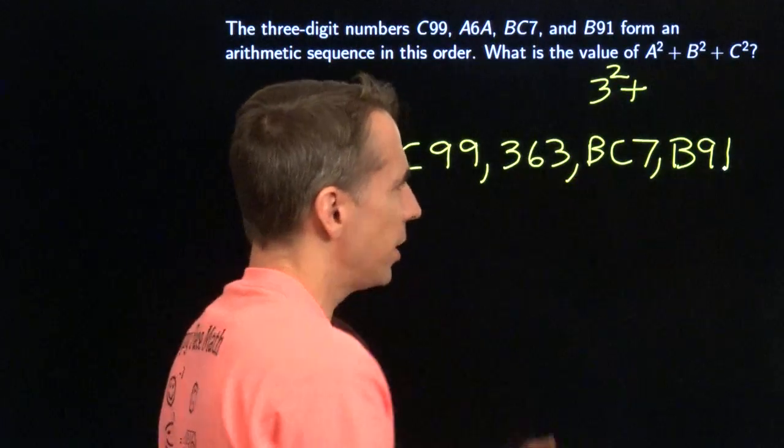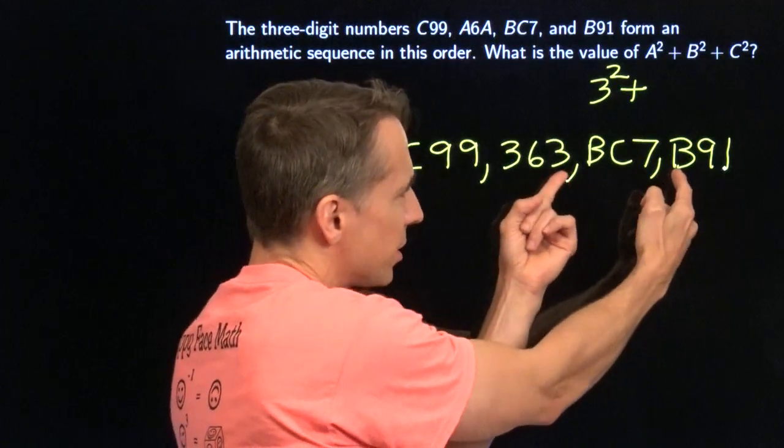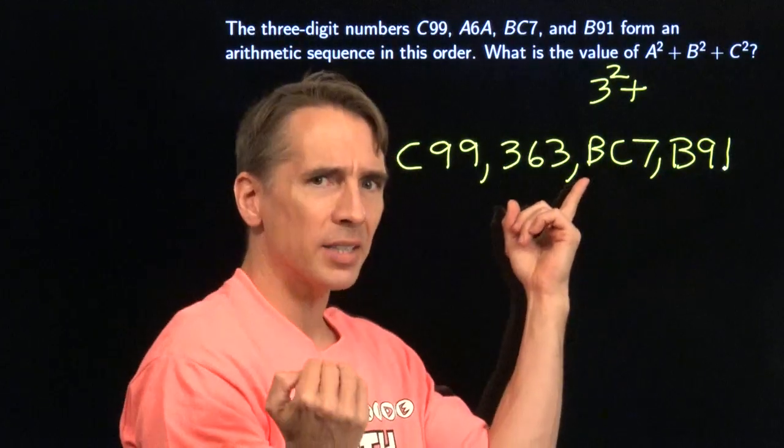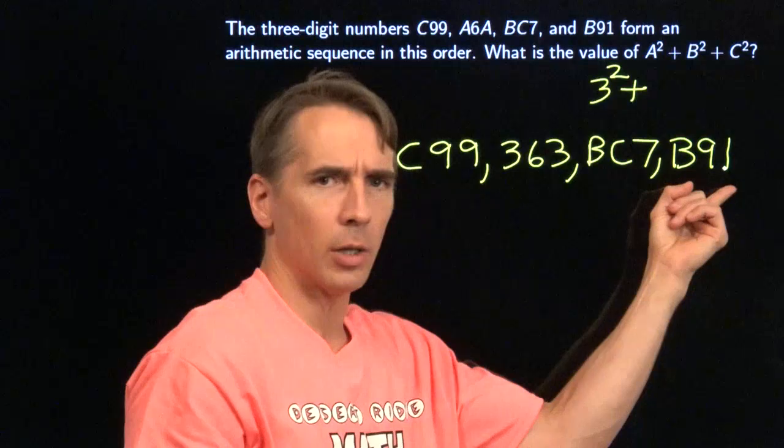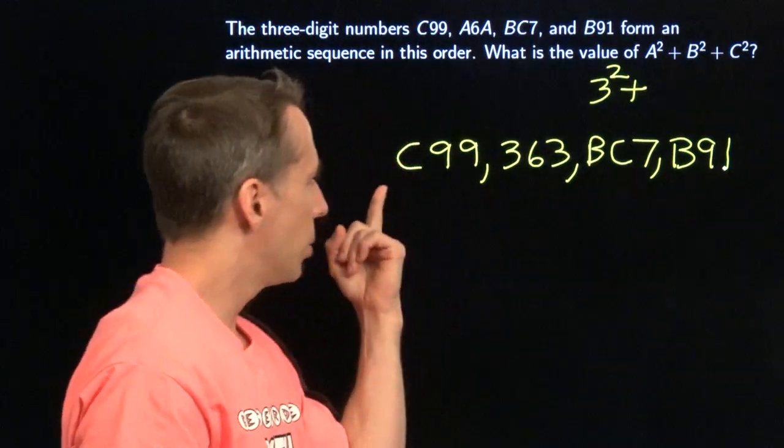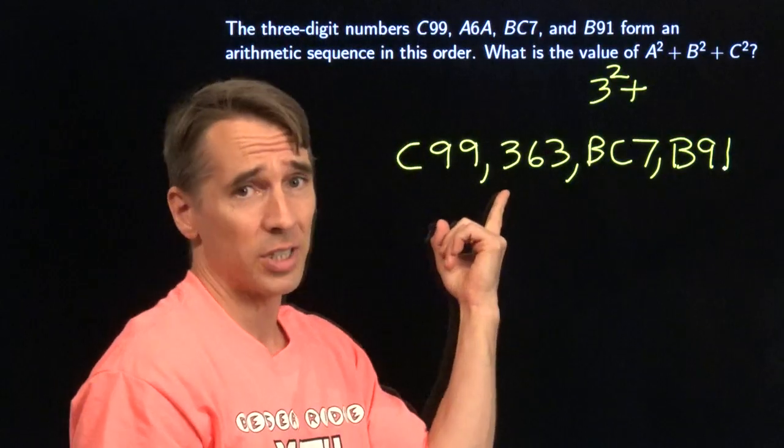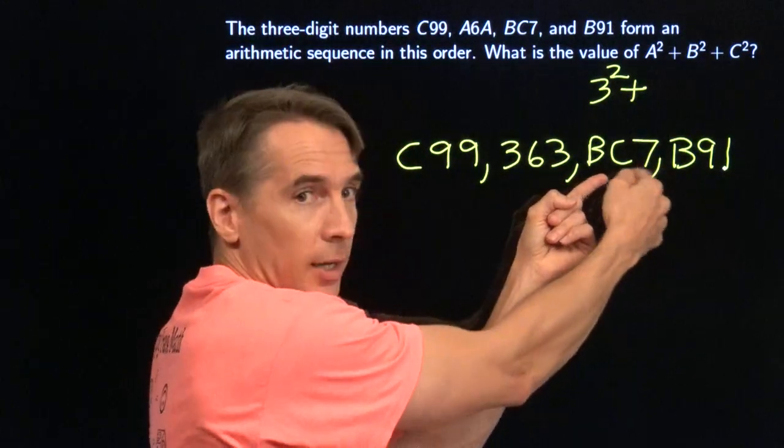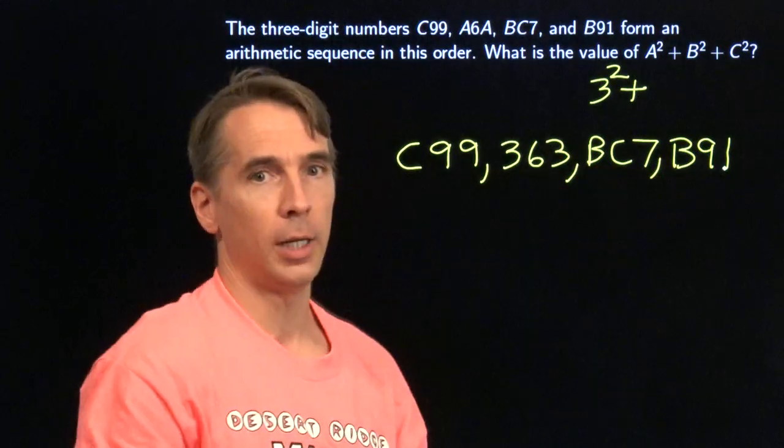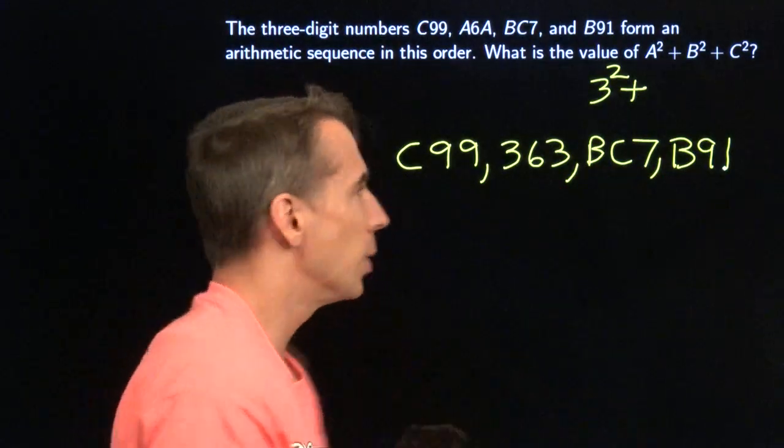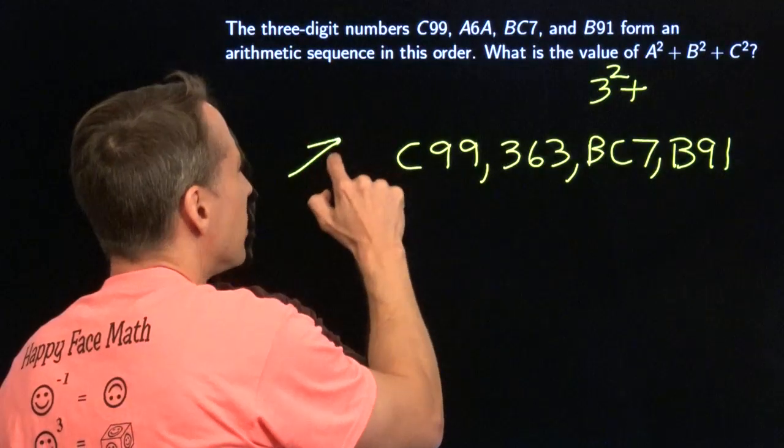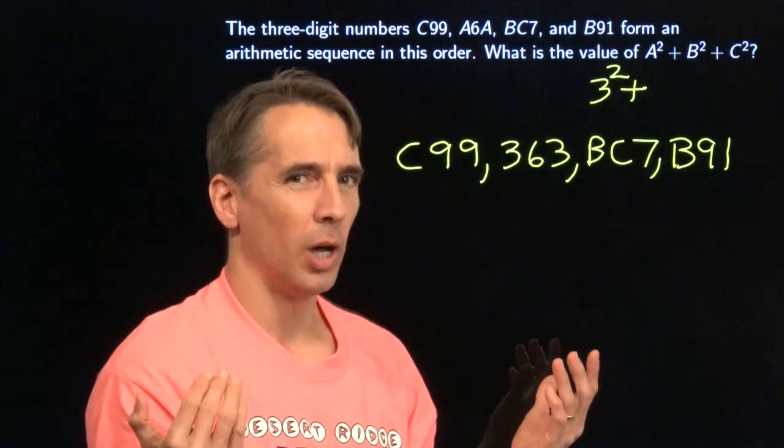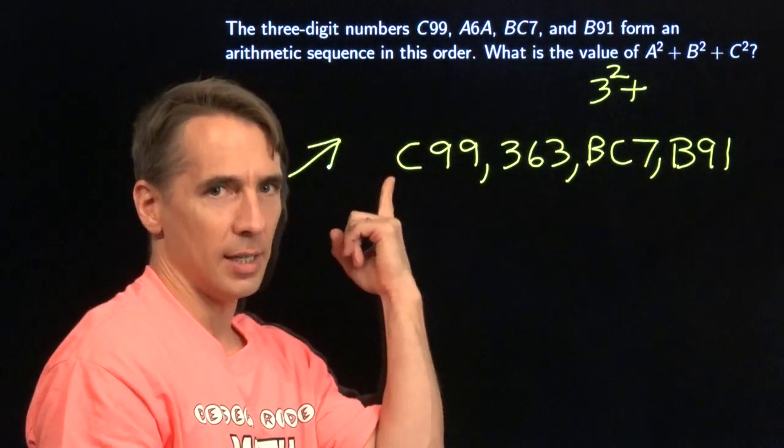If we're going down at each step, you compare these two, they have the same hundreds digit. That means the only thing c could possibly be is 9. That's the only way this number could end up being larger than this. But if c is 9, I'm going from 999 down to 363. We're going down way more than 100. And that's no good because we can't go down way more than 100 to get from here to here. So we can't possibly be going down. We have to be going up. And we're going up by something that's less than 100.